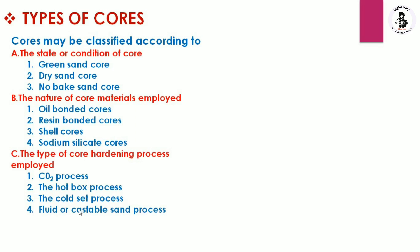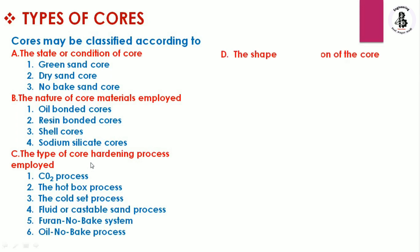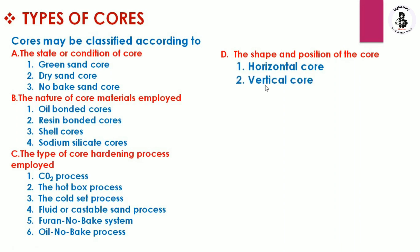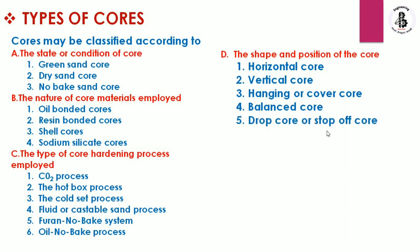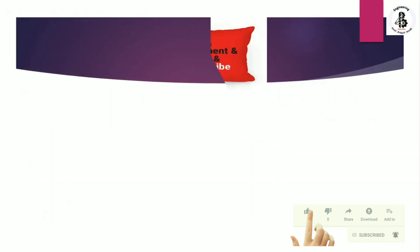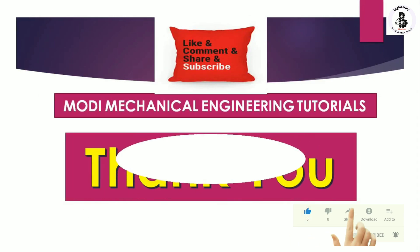Other hardening processes include: fluid or castable sand process, and furan no-bake sand process. Oil no-bake process is also used. By shape and positioning of the core — important for complex hollow castings — the types are: horizontal core, vertical core, hanging or cover core, balance core, drop core or stop-off core, ram-up core, and kiss core. These are all the types of cores. If you like this, please subscribe and share — thank you for watching.